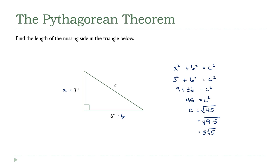As a math professor, that's where I would stop — 3 times the square root of 5 is a perfectly good answer; there's no reason to do anything else with it. If you're doing a practical problem, then yes, you may want to get your calculator out and find what the square root of 45 is. If you do that, you get a big, messy decimal number — approximately 6.708.